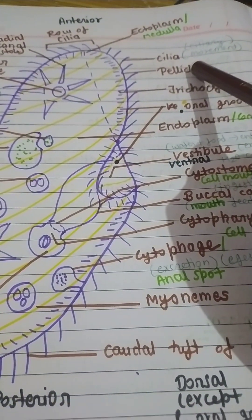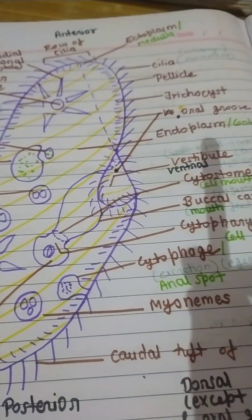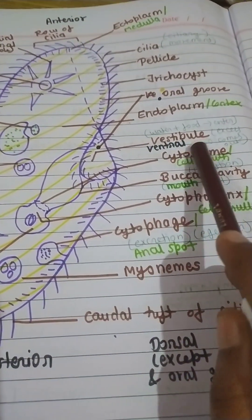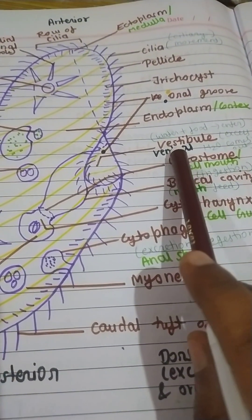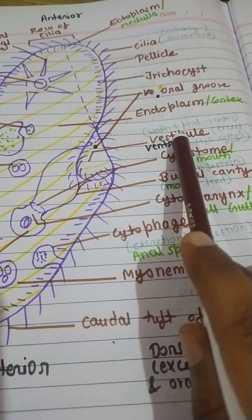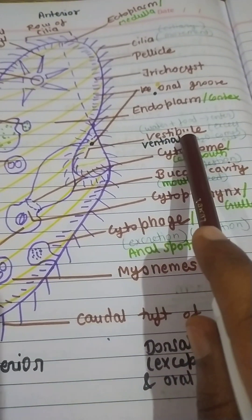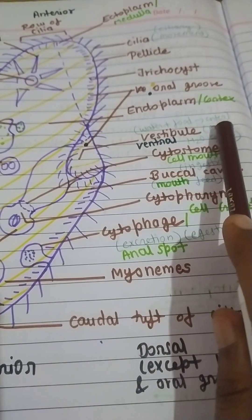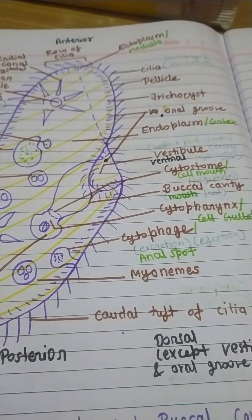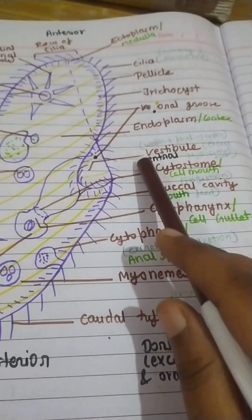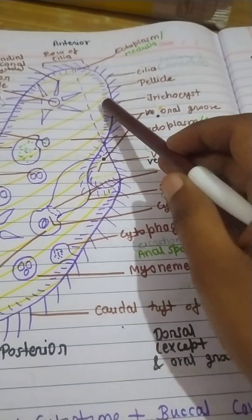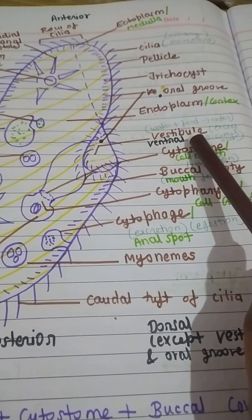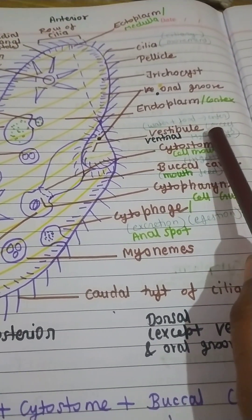The vestibule is present on the ventral surface. The vestibule is the place from where food and water particles enter — it is the opening from where the food particles enter. When paramecium performs ciliary movements, the vestibule is automatically opened, allowing food and water particles to enter.